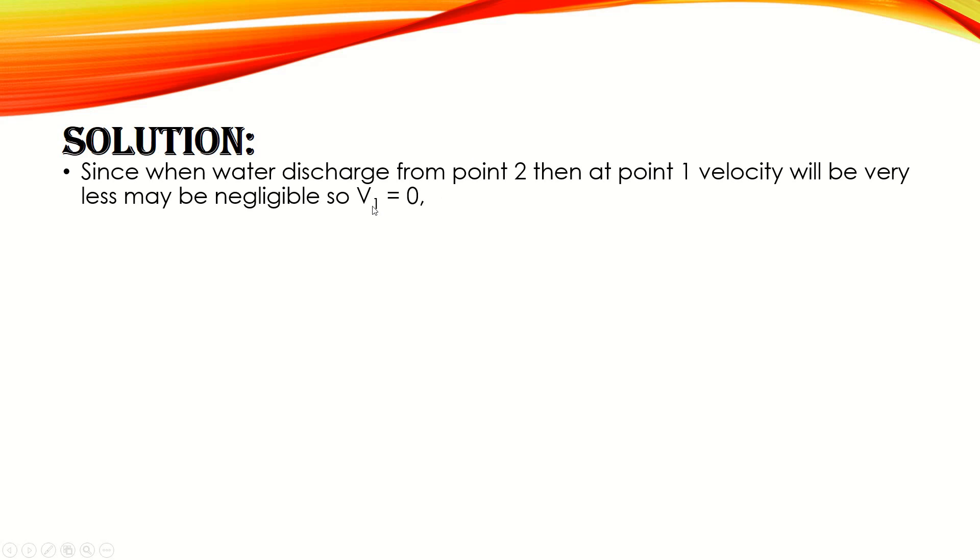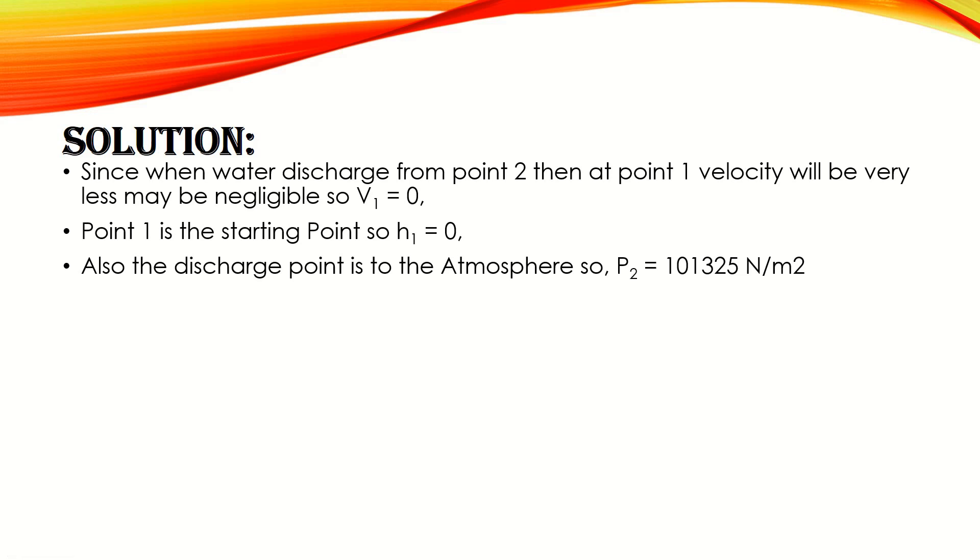So water velocity v1, velocity at point one, we have taken as zero. Point one is the starting point, so height we have considered zero. Also, the discharge point, point two, is to the atmosphere, so the pressure at point two will be equal to atmospheric pressure, that is 101,325 N/m². And pressure at point one, which is the pipe pressure, is 10 kg/cm². Converting into N/m², we get 980,665 N/m².